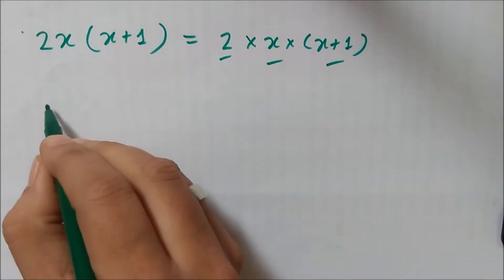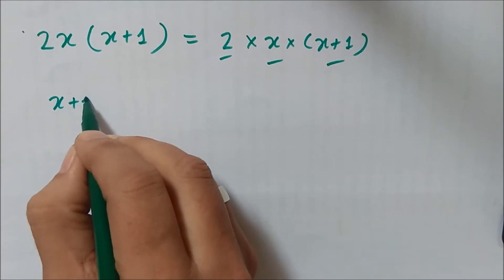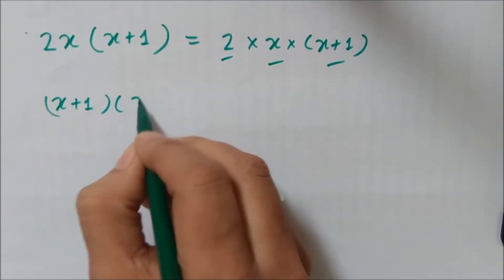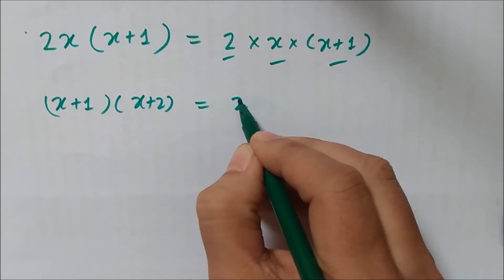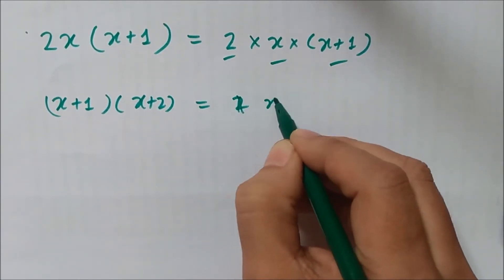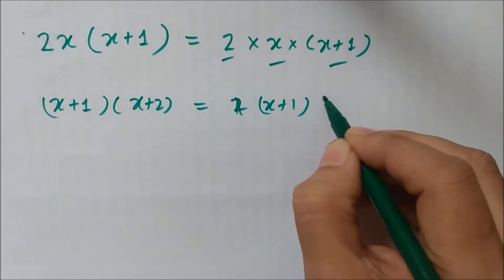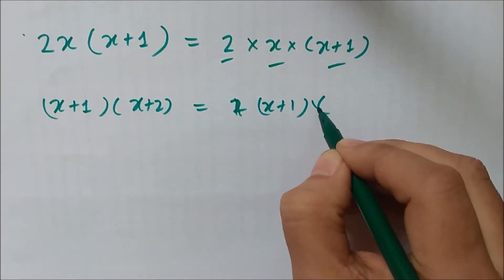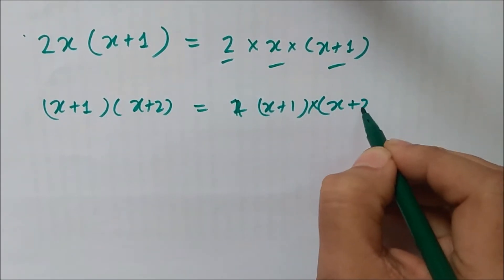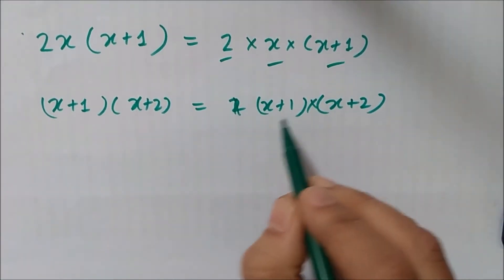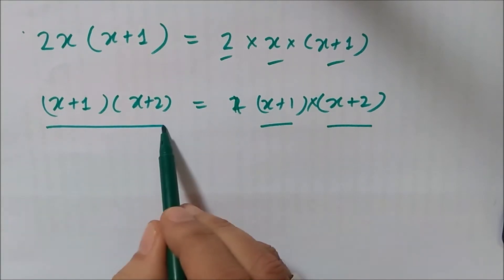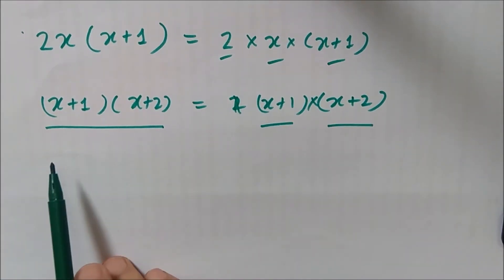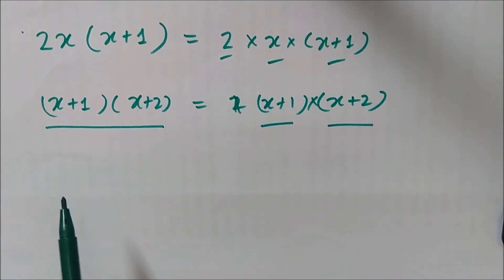Similarly, if we take another expression x plus 1 into x plus 2, both x plus 1 and x plus 2 are the irreducible factors of the expression x plus 1 times x plus 2. When we factorize an algebraic expression, we write it as a product of factors.